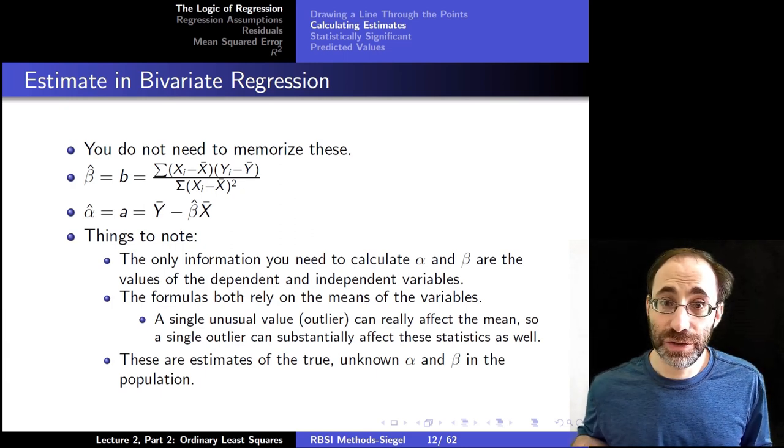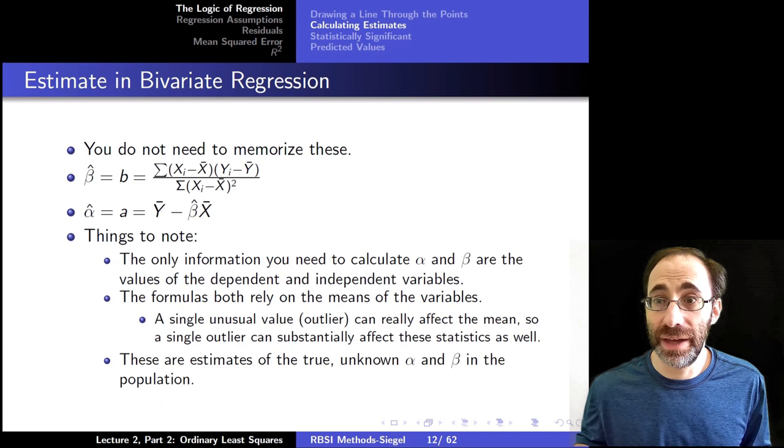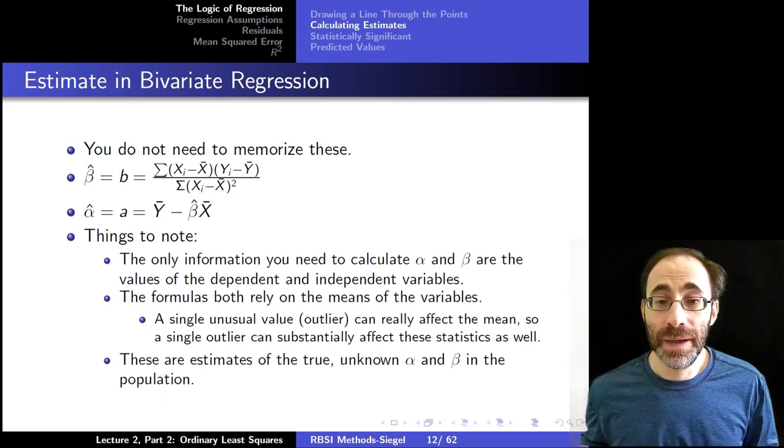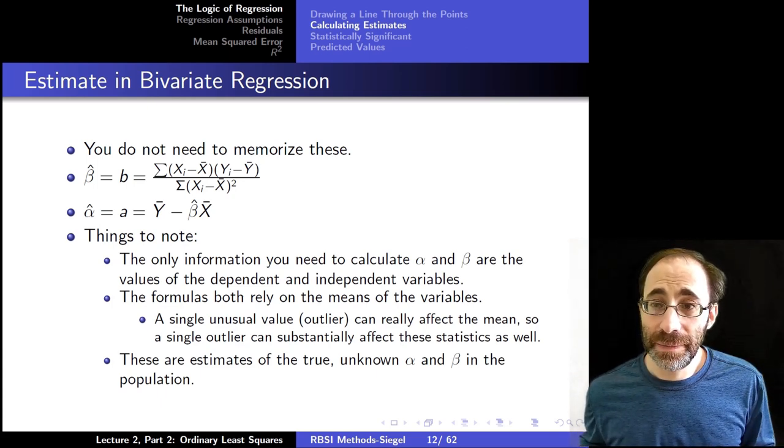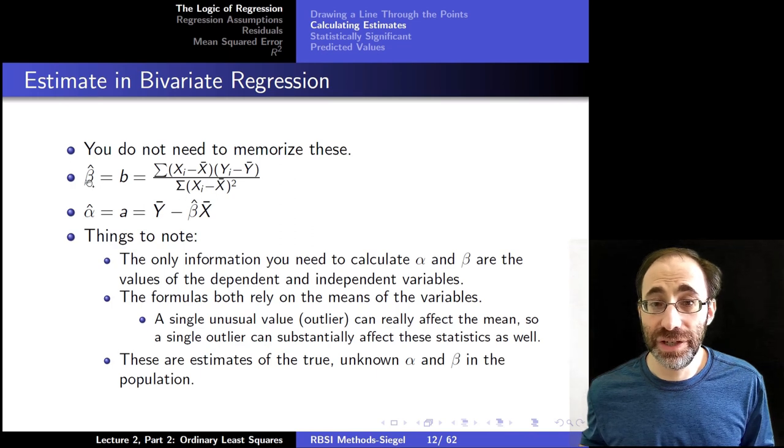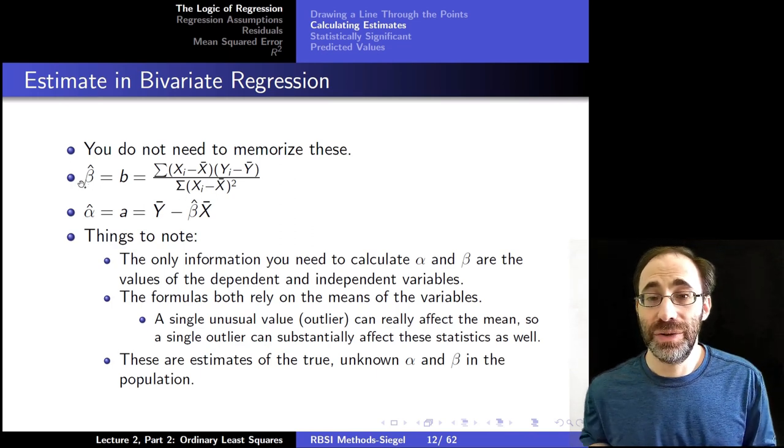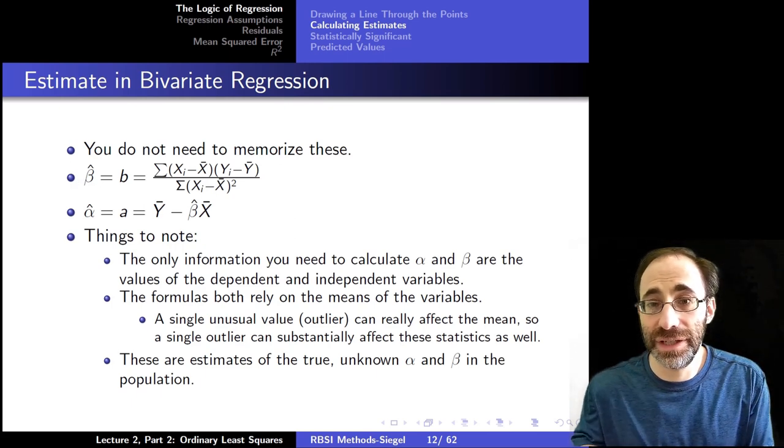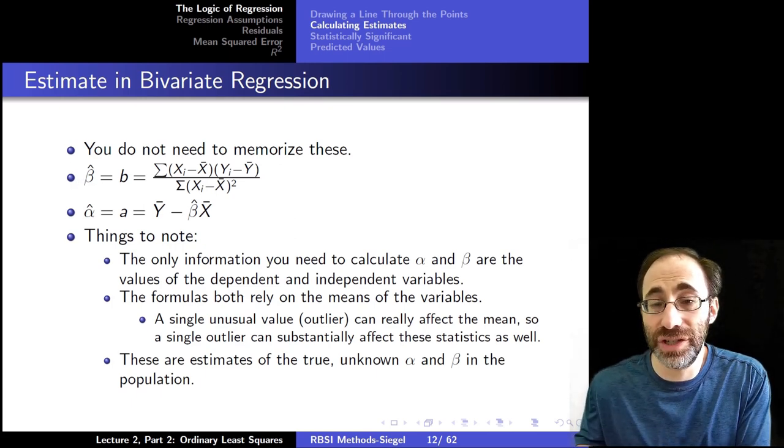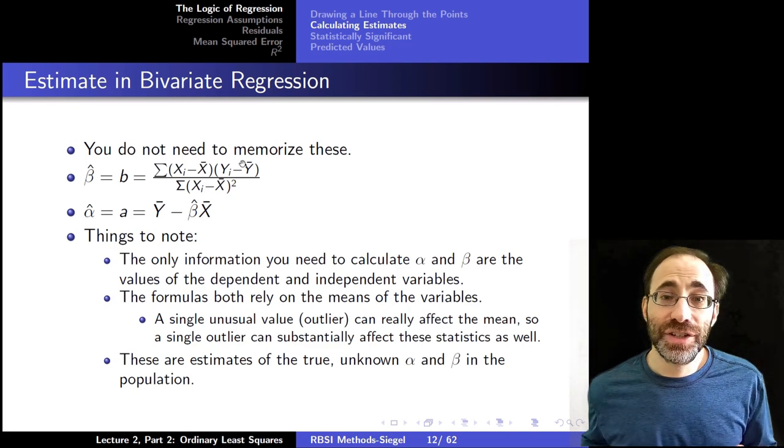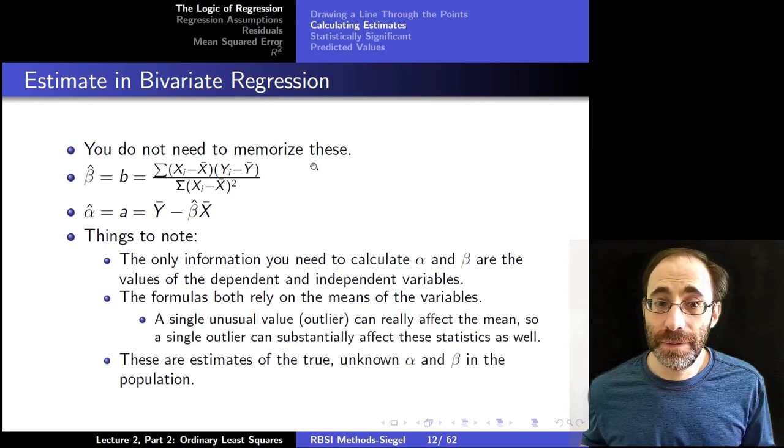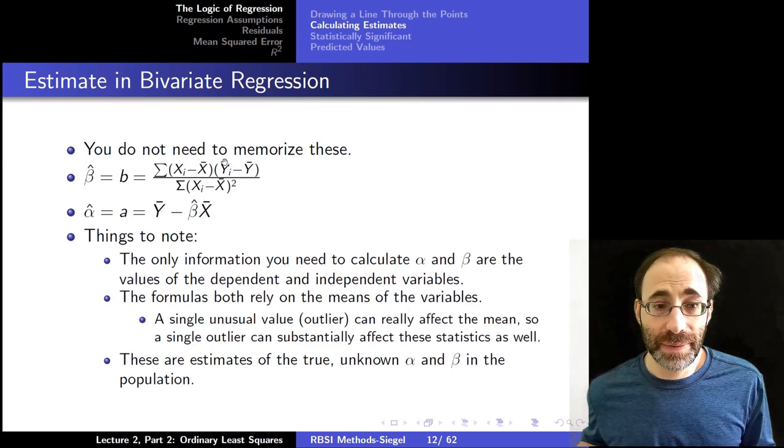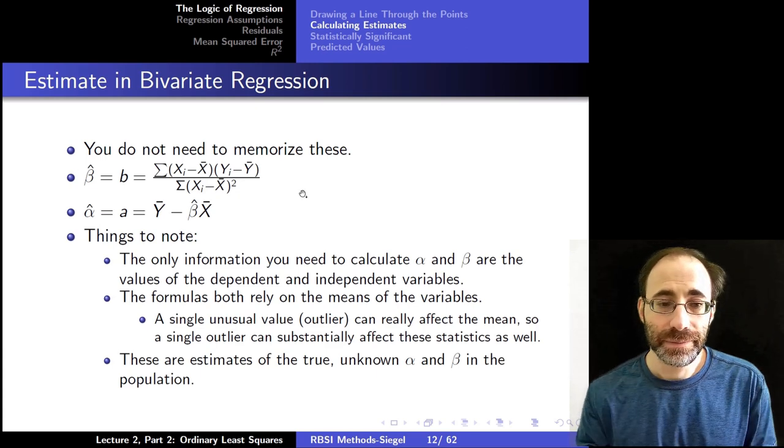Essentially, you're comparing the covariance between X and Y to the variance in X. As the variance in X grows higher, the measured coefficient gets smaller, because there's more variation naturally in X and you're less able to attribute differences due to correlations between X and Y. As the covariance between X and Y gets bigger, the correlation β gets bigger.